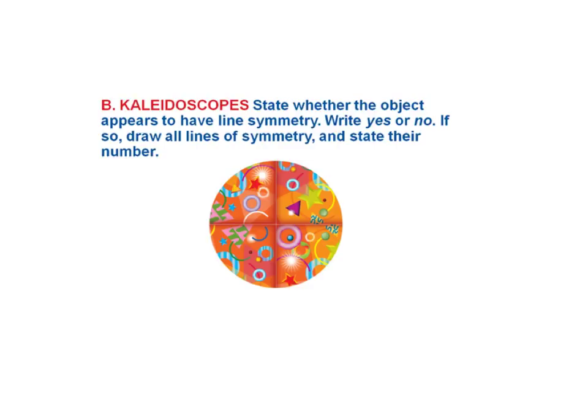Now here, kaleidoscope. State whether the object appears to have line of symmetry, yes or no. If so, draw all lines of symmetry and state their number. Now if you look at the picture, I could move it around, I could do whatever I want. There is no line I could draw anywhere that could pick this up, fold it in half, and have it match up exactly. The outer shape, yes, it's a circle. But the inner shapes here make it so it is impossible to have symmetry.